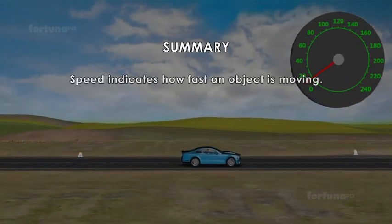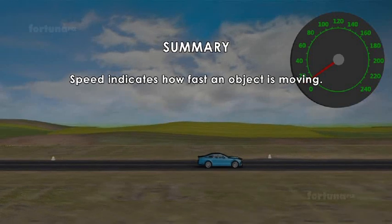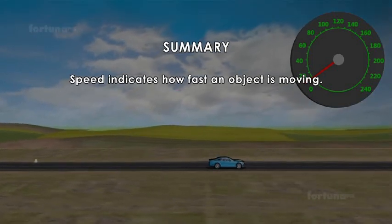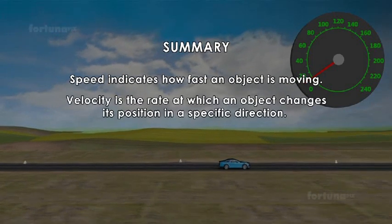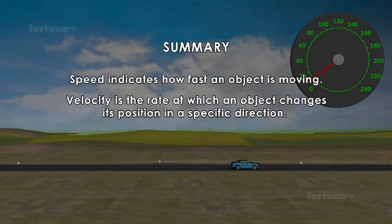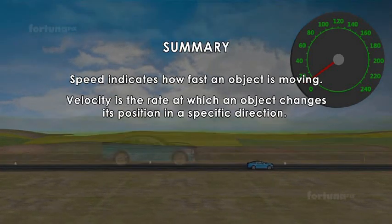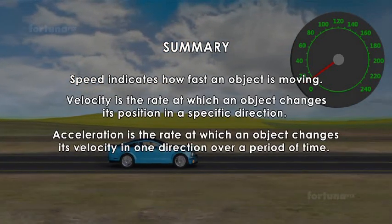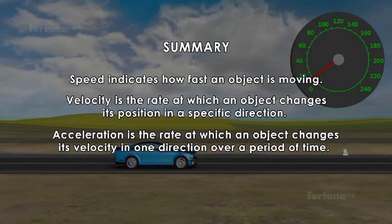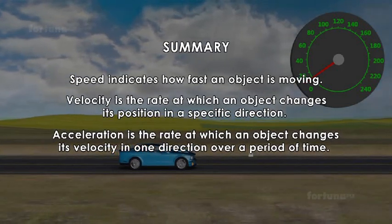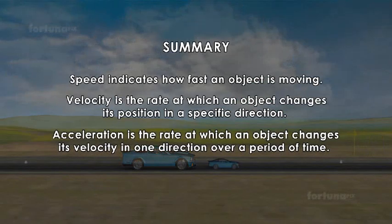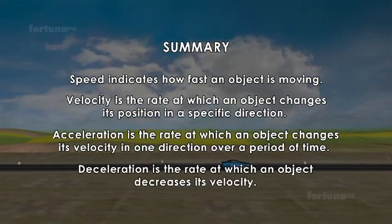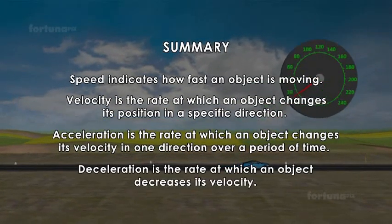Summary. Speed indicates how fast an object is moving. Velocity is the rate at which an object changes its position in a specific direction. Acceleration is the rate at which an object changes its velocity in one direction over a period of time. Deceleration is the rate at which an object decreases its velocity.